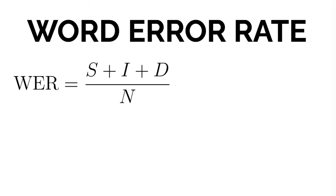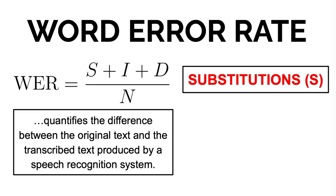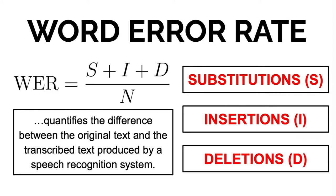Simply put, what it does is to quantify the difference between the original text and the transcribed text produced by the system, considering three possible categories of errors: substitutions, insertions, and deletions of words.